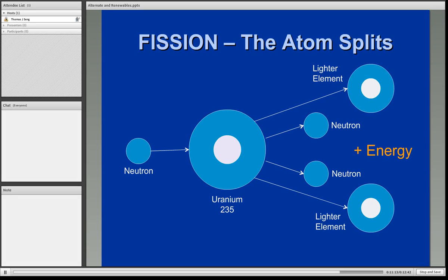Without going into too much of the physics here, this is a basic diagram of how we create nuclear energy through the process of nuclear fission.